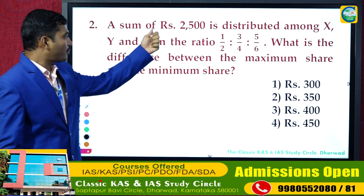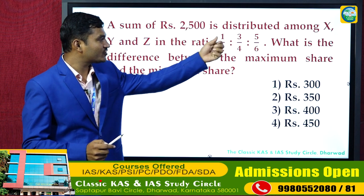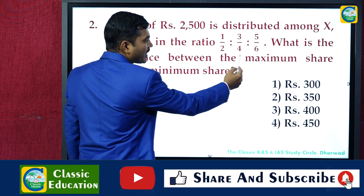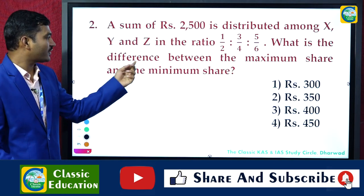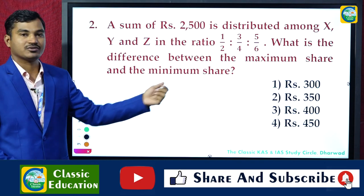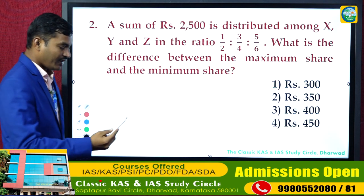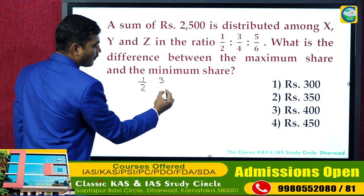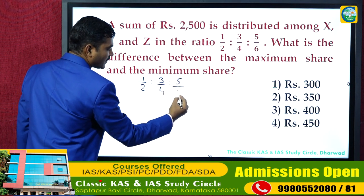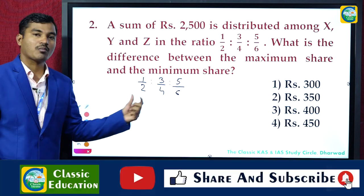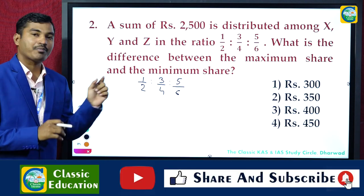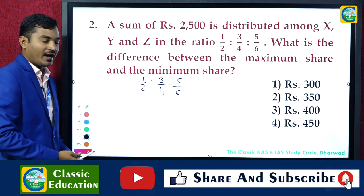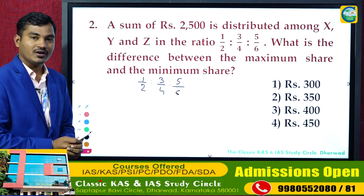A sum of rupees 2500 is distributed among x, y, and z in the ratio 1/2 : 3/4 : 5/6. What is the difference between the maximum share and the minimum share? When ratios are given in the form of fractions, to convert them to an appropriate form, we take the LCM of the denominators.